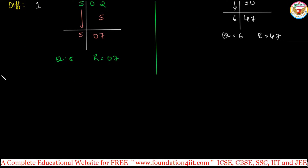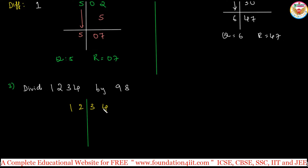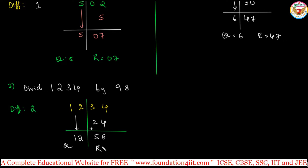Let us have a few more examples for a clearer idea. Take the four-digit number 1234 divided by 98. The base is 100, so take 2 digits from the right-hand side. The difference is 2, since 100 minus 98 is 2. Bring down 12, then 12 times 2 is 24. Add 34 plus 24, which gives 58. So the quotient is 12 and the remainder is 58. We can do this problem in just seconds.